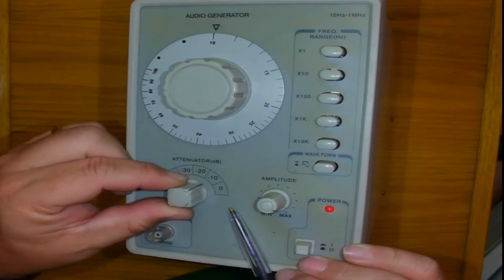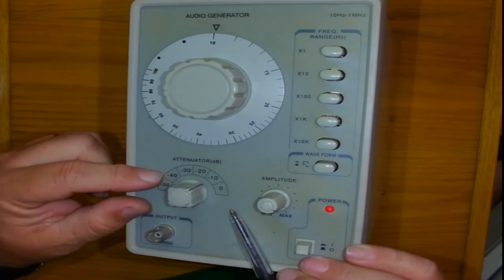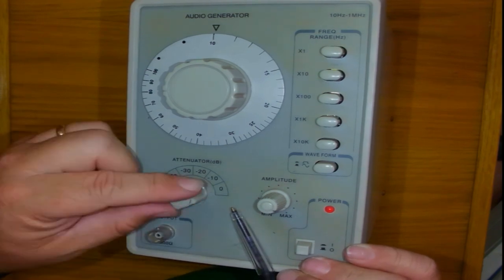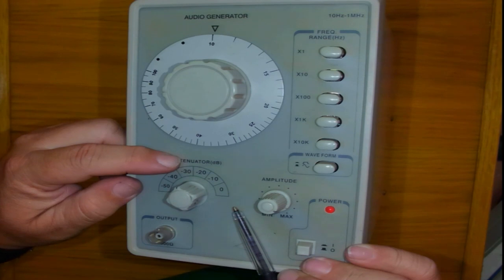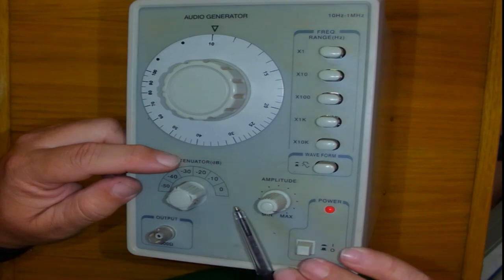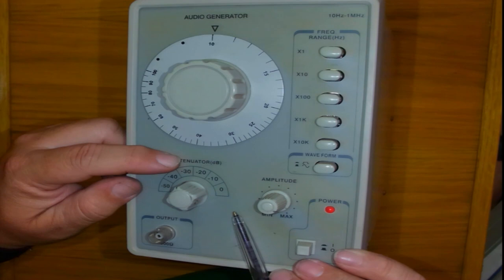So at 0 means whatever is the maximum or the output voltage here is not reduced by anything. But if I go minus 10, it will be reduced. Minus 20, it will be reduced even more. Minus 30 means 30 times smaller than before. The scale here is dBs, which means it is logarithmic.